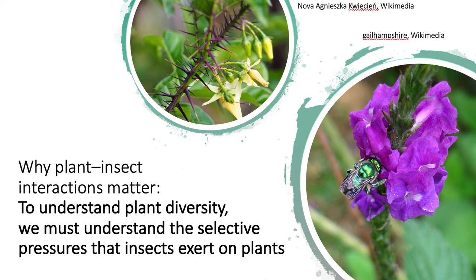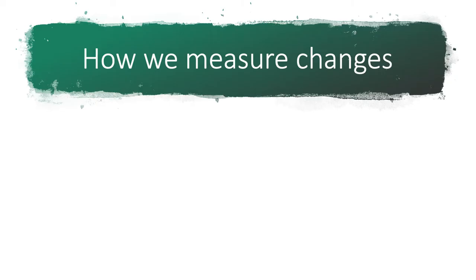These plant-insect interactions have very broad implications. To make a long story short, in order to understand plant diversity, we must understand the selective pressures that insects exert on plants. And so that raises the question of how do we measure changes in plant-insect interactions in deep time, if we want to see how these interactions change in response to climate change, mass extinction, things like that.